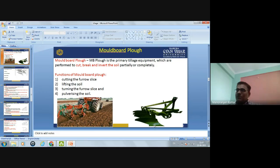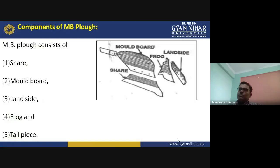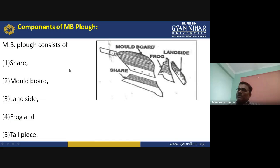In the picture you can see the MB plough, where this part is known as the moldboard. The MB plough is attached to the tractor in the field. The different parts of the MB plough are the share, moldboard, land side, frog, and tailpiece. These are the components visible in the picture. The share is the part responsible for cutting the soil. The moldboard is the part used for inversion of the soil.